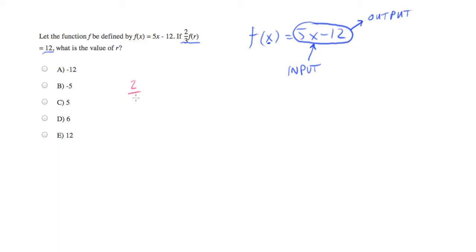We want two-thirds f of r to equal 12. Now f of r is a function, and right now this is defined as output, because we have the whole function f of r.